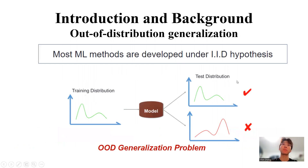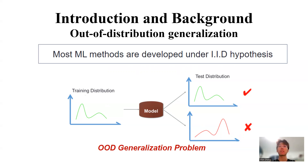In this paper, we focus on the problem of out-of-distribution generalization, namely the training distribution is different from the test distribution. This is a major difference from most machine learning methods, because they are mostly developed under the i.i.d. hypothesis.